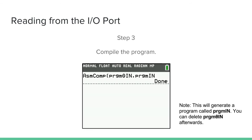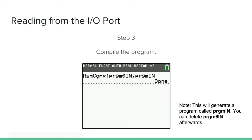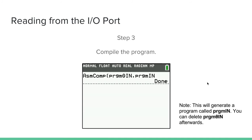Once you're done, compile the program. You use the asm( function — found in the catalog — with prgmThetaN as the first argument and prgmN as the second. I like putting Theta in my file names to represent the source code; without the Theta, that's the compiled program.